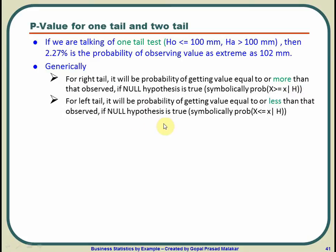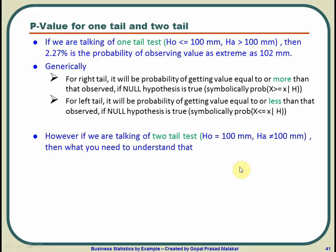In the case of a left-tail test, it will be the probability of getting a value equal to or less than that observed — the probability of X less than or equal to what you have already observed. If null hypothesis is true, it would be less than or equal to 98. So in the case of one tail, if you have observed 102, then 2.27% is the p-value. However, if we are talking of a two-tail test where H0 is 100 mm and H-alternative is not equal to 100 mm.